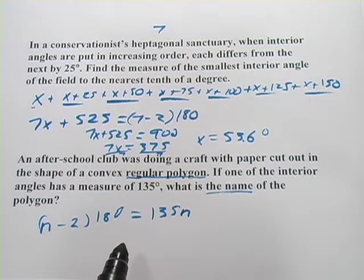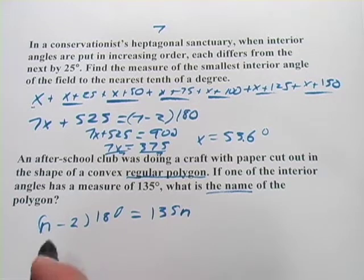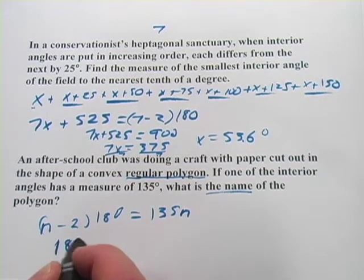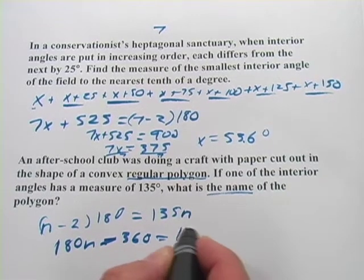So now we've just got to solve this for n. I'll multiply my 180 through the parentheses here. I've got 180n minus 360 equals 135n.